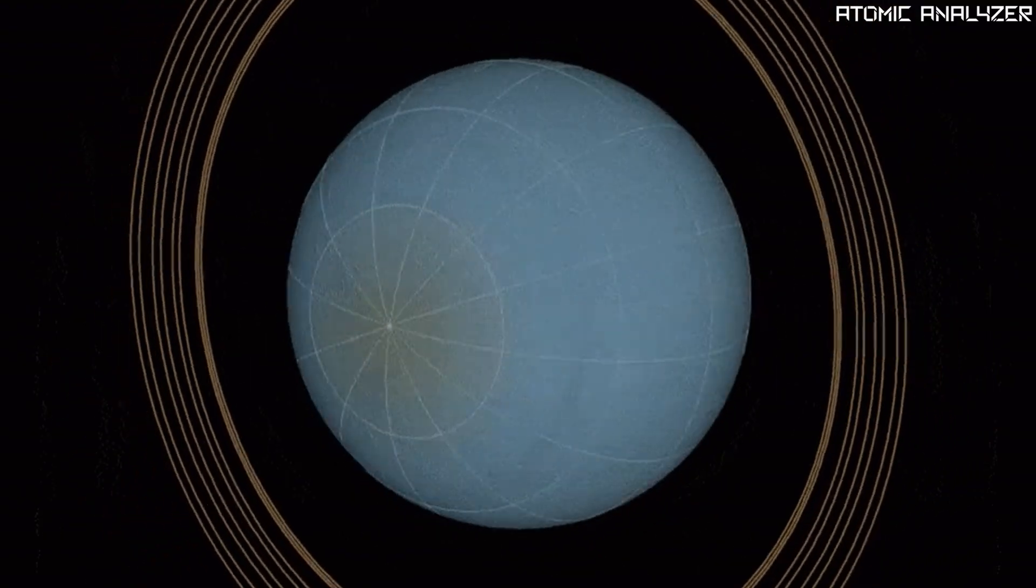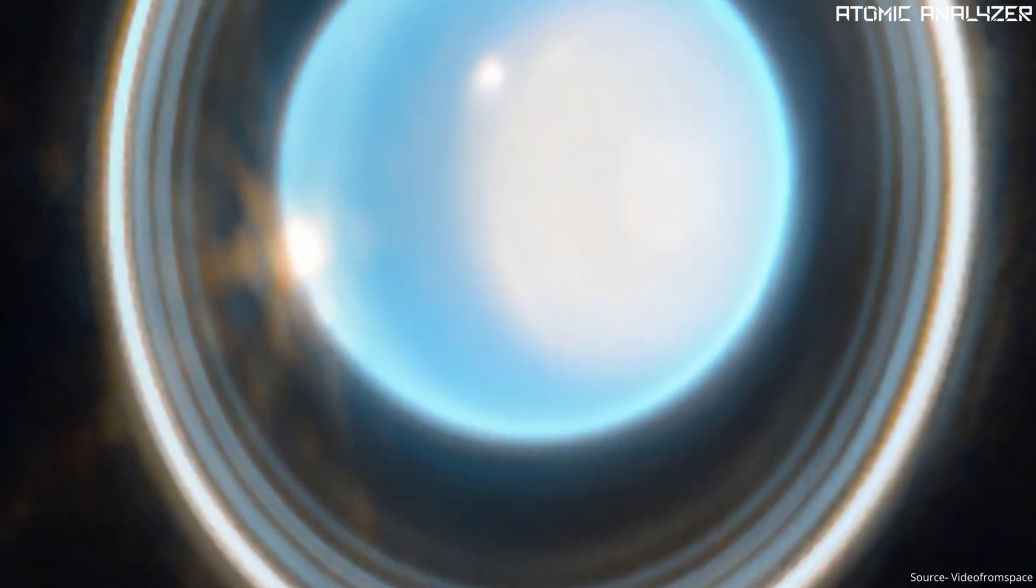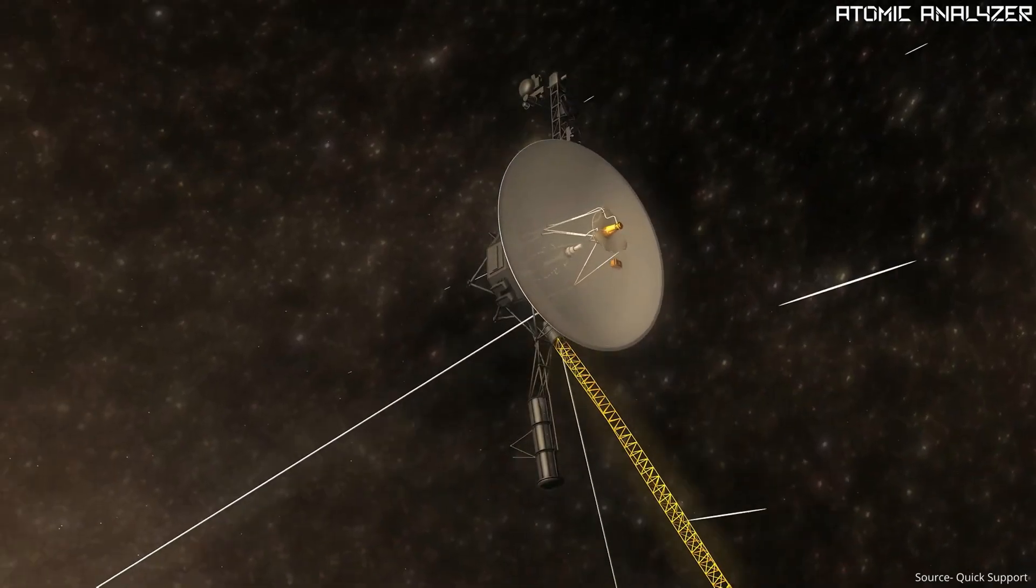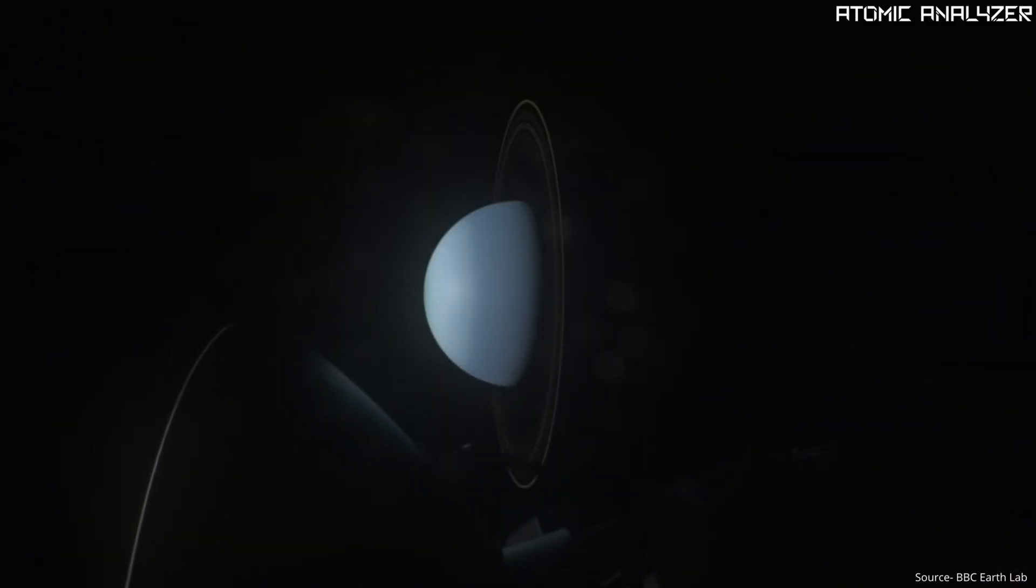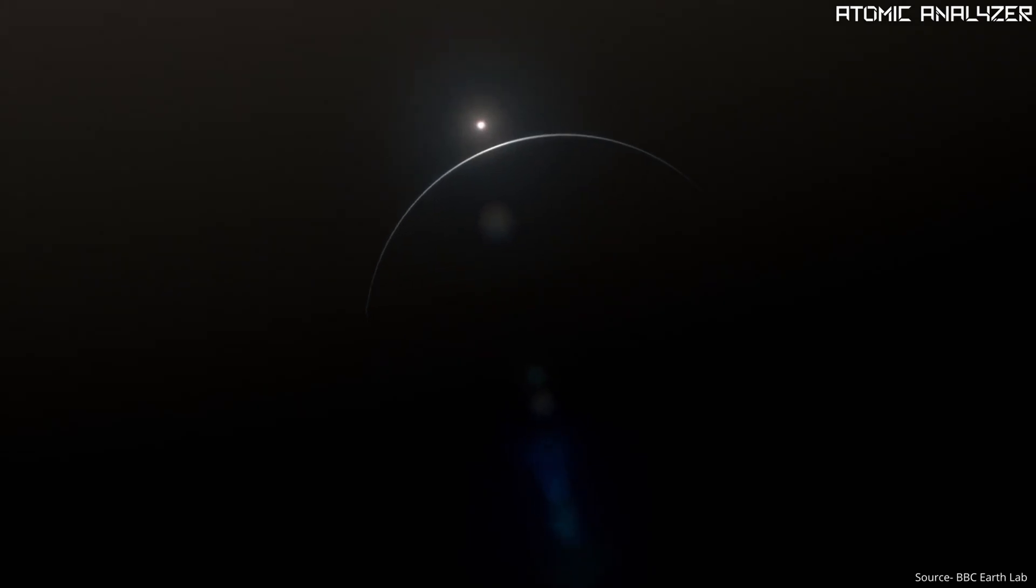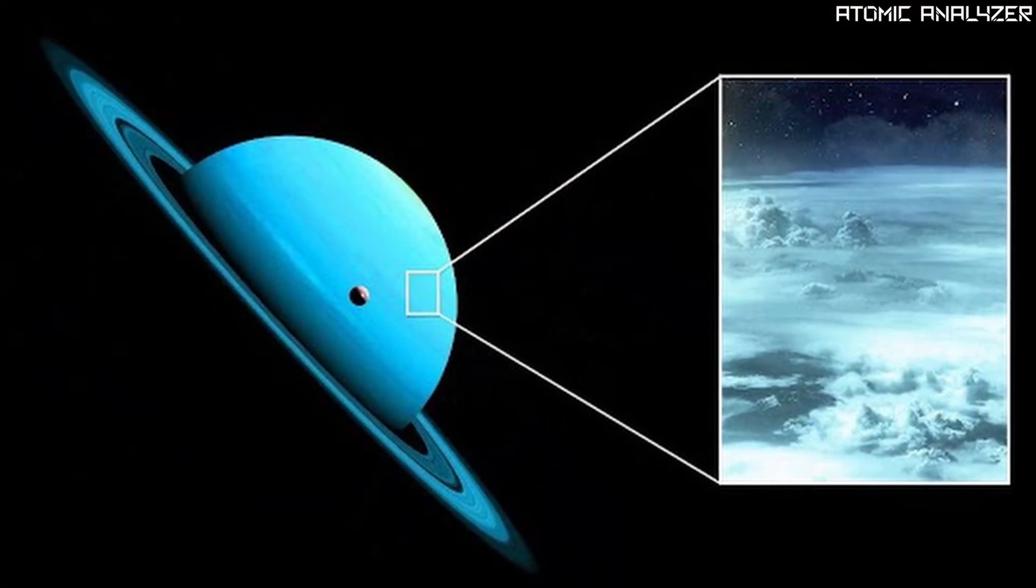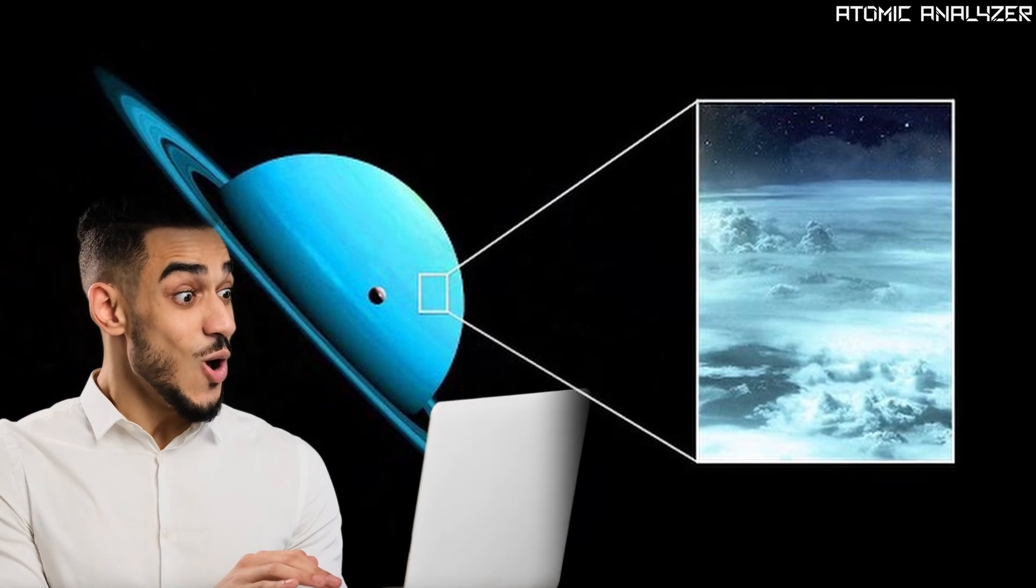Before we wrap up, let's talk about some recent discoveries. Scientists have been studying Uranus using space probes and telescopes and they are learning more all the time. One exciting finding is that Uranus might have a slushy ocean beneath its clouds. Who would have thought?